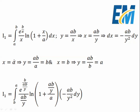Now for the bounds: if x = a, then y = ab/a, which is b. And for x = b, y = ab/b, which is a. So the new bounds are from b to a. Here we have e^(b/x), so e^b divided by (ab/y). Similarly, inside the ln, x/a becomes (ab/y)/a. And dx equals minus ab over y squared dy.